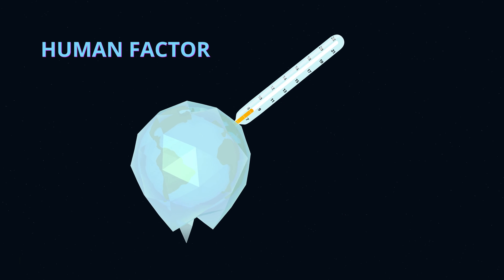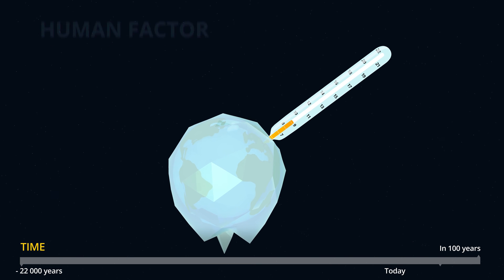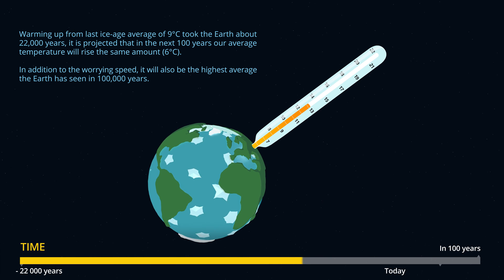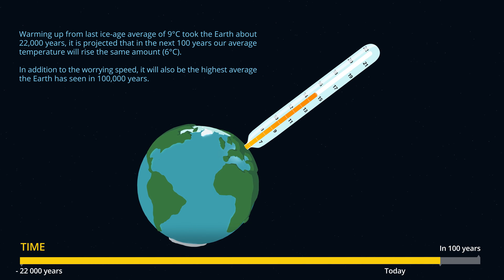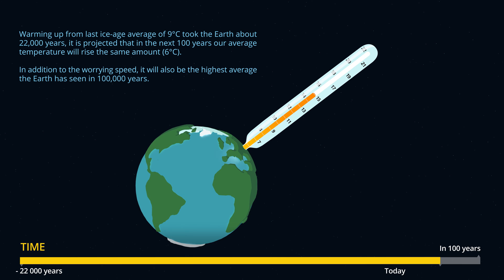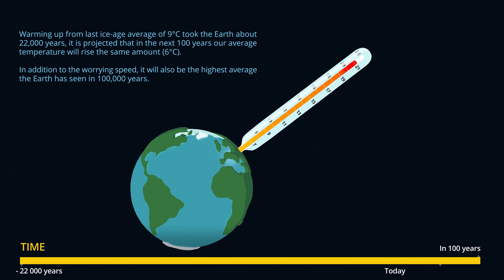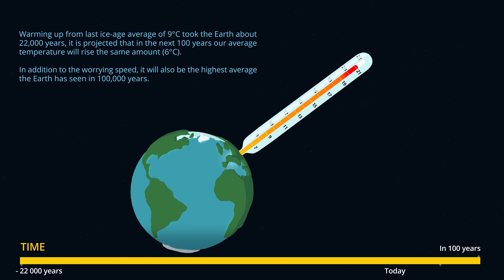Human factor. Warming up from the last ice age average of 9 degrees Celsius took the Earth about 22,000 years. It is projected that in the next 100 years, our average temperature will rise the same amount — 6 degrees Celsius. In addition to the worrying speed, it will also be the highest average the Earth has seen in 100,000 years.